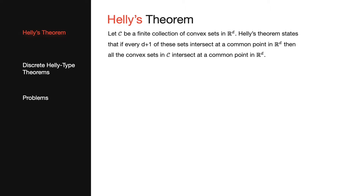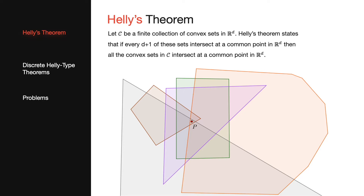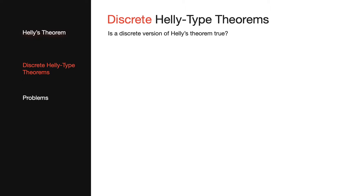For this presentation, we will mainly be concerned with points and regions in the plane. Helly's theorem in the plane basically states that for every finite collection of convex sets, if every three sets intersect at a point, then all sets must intersect at a point in the plane.